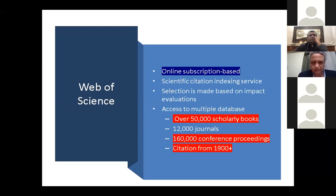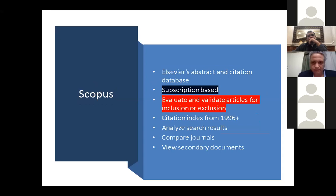Web of Science is subscription-based and allows you access to over 50,000 books, 160,000 conference proceedings, and citations from the year 1900. Scopus is also subscription-based and not free. It is selective — it doesn't include all published papers and starts from 1996. It analyzes research results, compares journals, and allows you to view secondary documents related to the research.